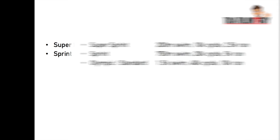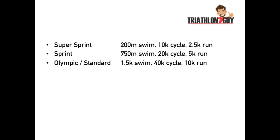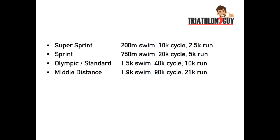The Olympic, also known as the standard, is a 1.5k swim, a 40k cycle and a 10k run. The middle distance is a 1.5k swim, a 90k cycle and a 21k run.